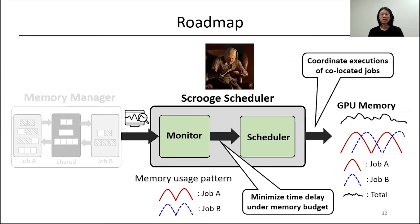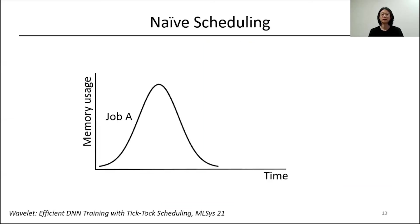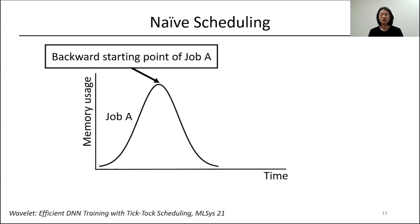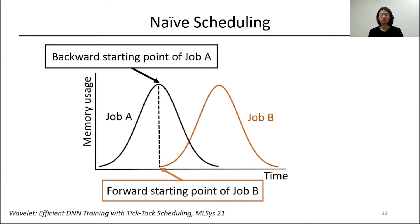Now I'm going to explain the second contribution, the Scrooge scheduler, which minimizes time delay. To achieve this, we need a sophisticated scheduling policy that is aware of memory usage patterns. A naive scheduling policy could be aligning the start of the forward pass of one job with the start of the backward pass of the other job. While this seems to achieve our goal of overlapping allocation and deallocation phases to share memory, it could fail to prevent memory oversubscription.